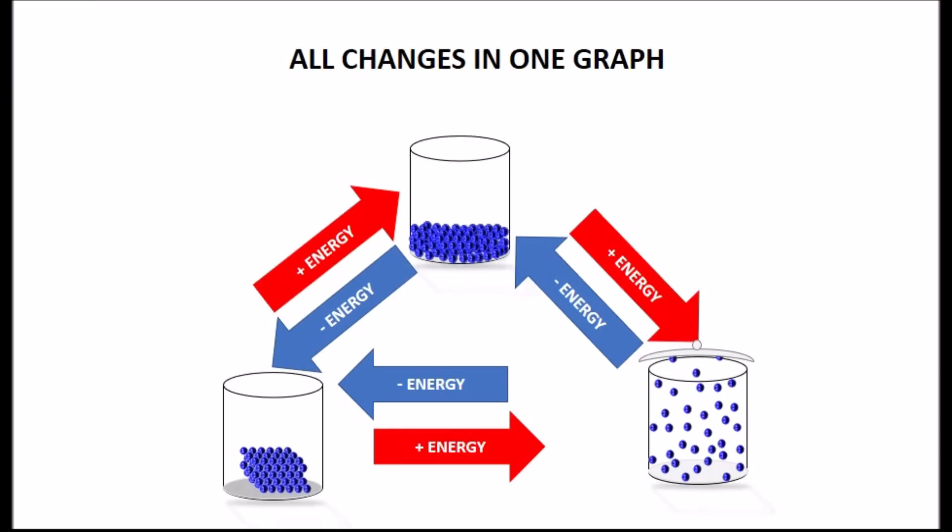We will now analyze the six changes in state of matter that we need to know. All the red arrows mean that you need to provide energy, while the blue arrows mean that the energy needs to be taken out from the substances for the change to take place.